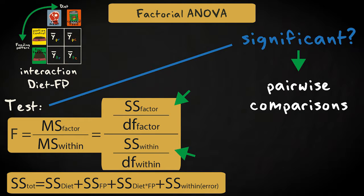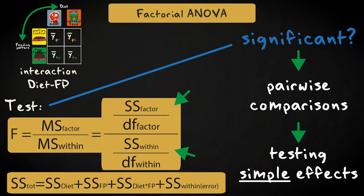If the interaction is significant, it can help to interpret it by following up with pairwise comparisons of the individual groups to see what causes the interaction. This is referred to as testing the simple effects. We'll discuss how to perform these follow-up comparisons later.